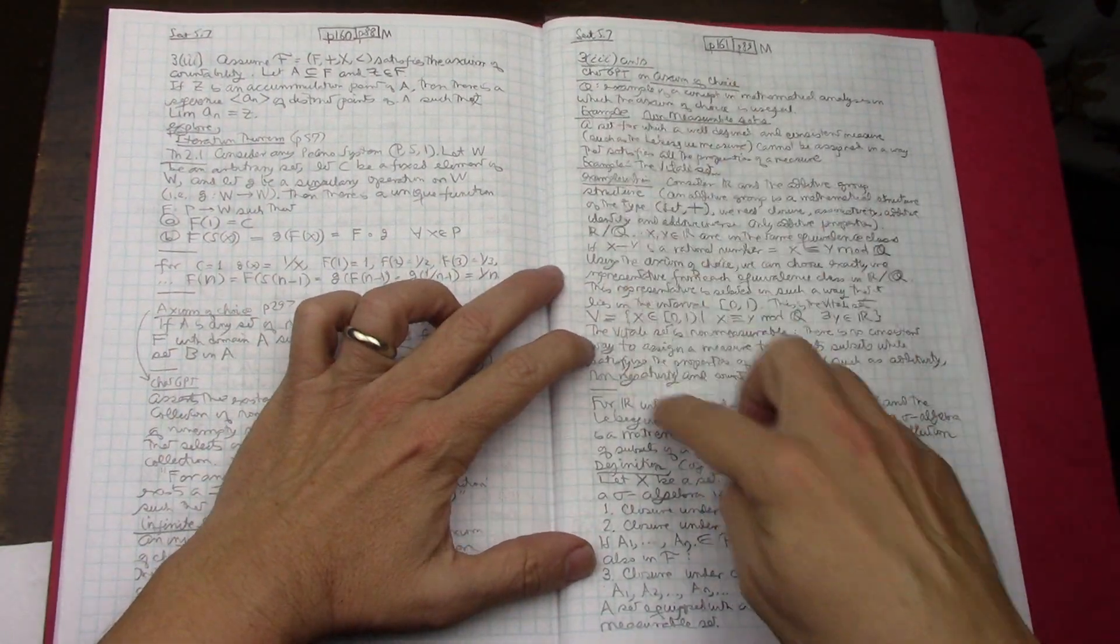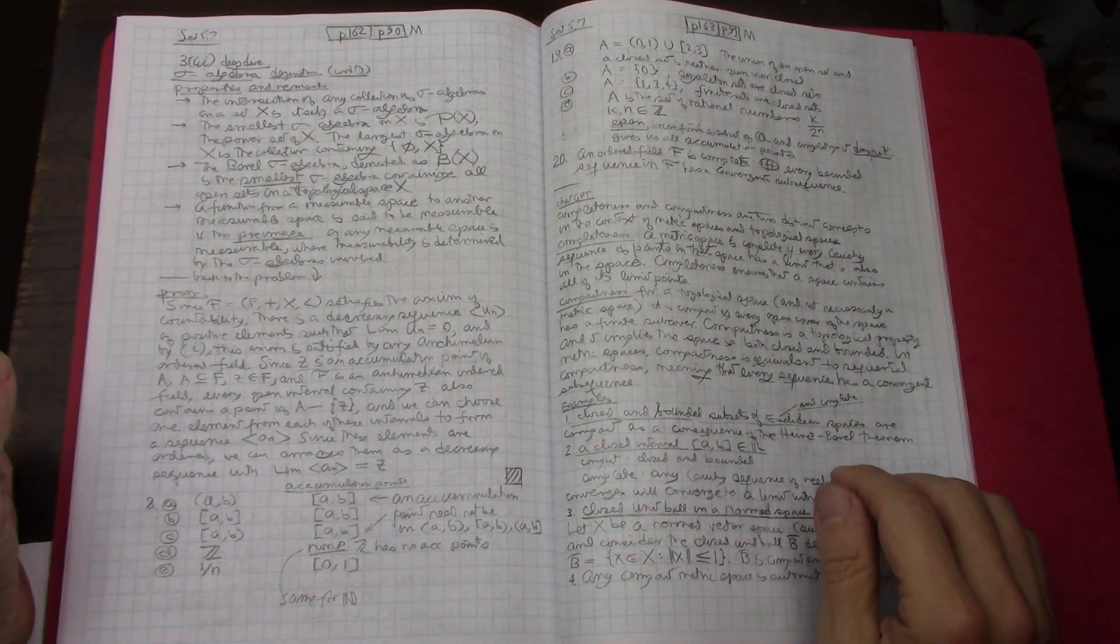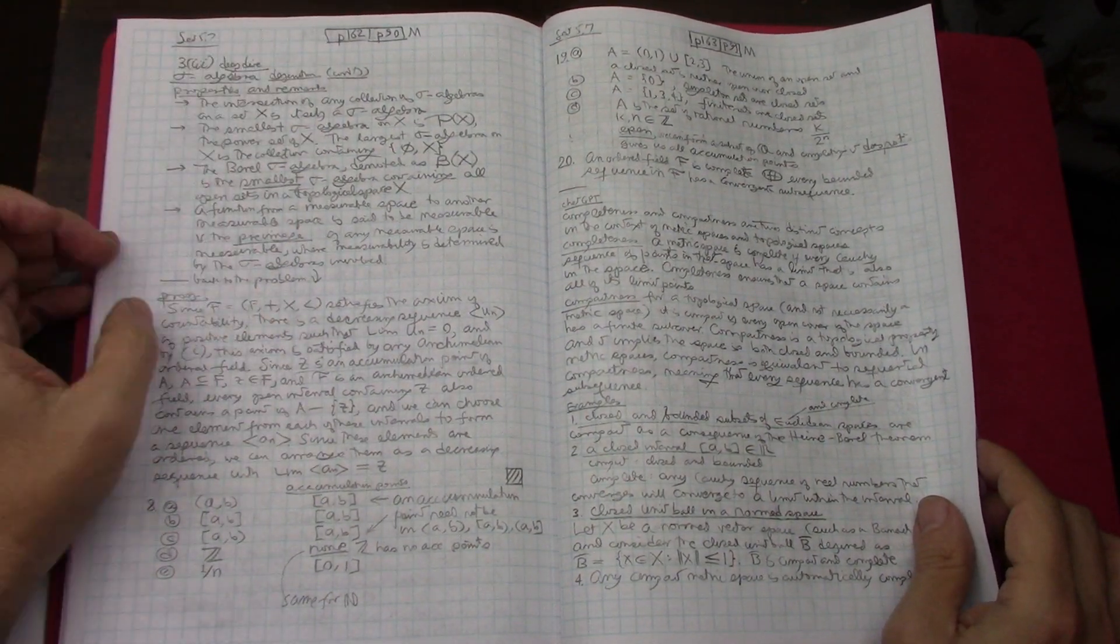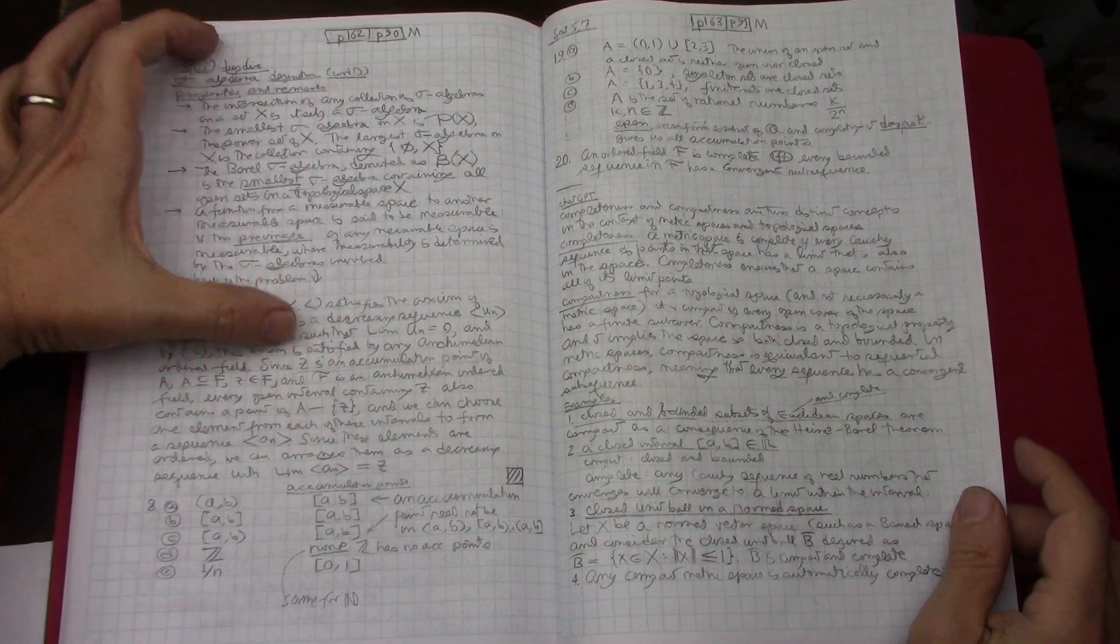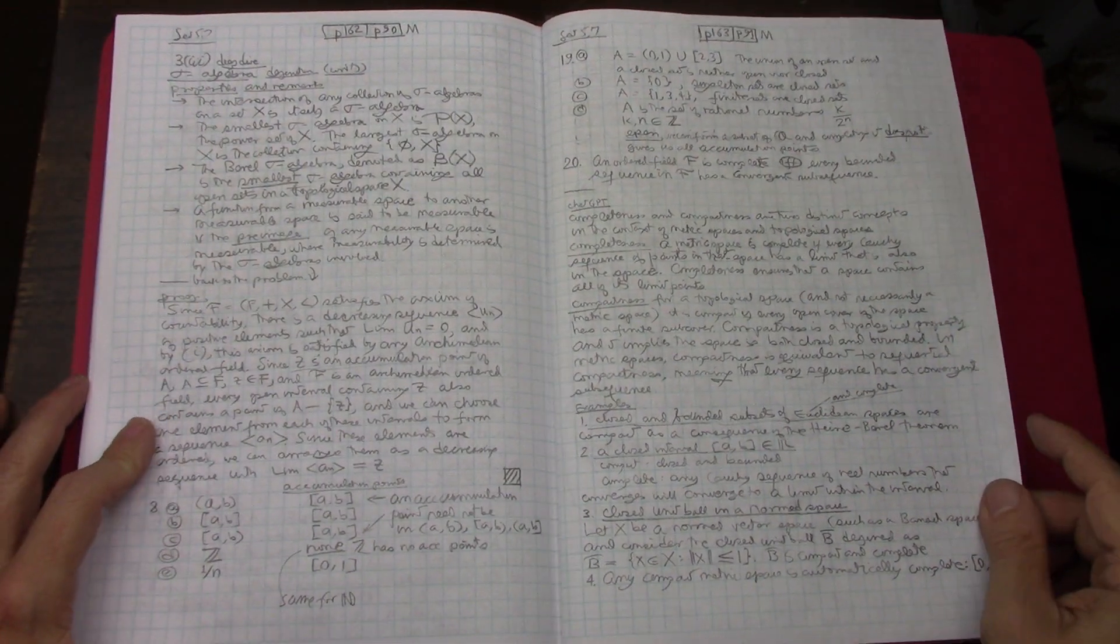The axiom of choice, a little bit of ChatGPT, which is as always tricky. A little bit about the sigma algebra, something that I'm very interested in, very curious in. But it's an advanced topic that's outside of the realm of this book. But it just came up as part of my ChatGPT lookups.